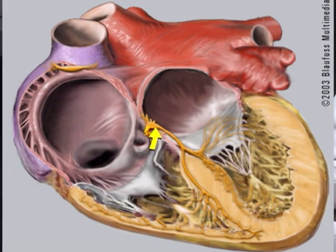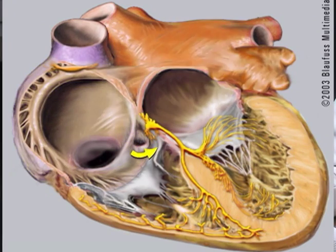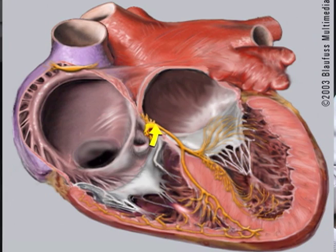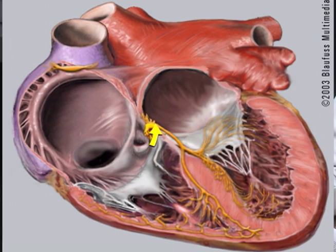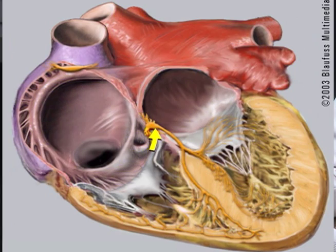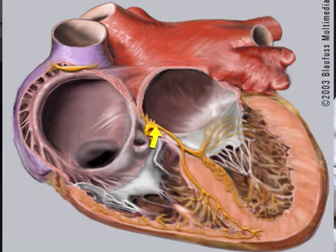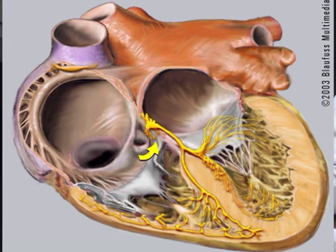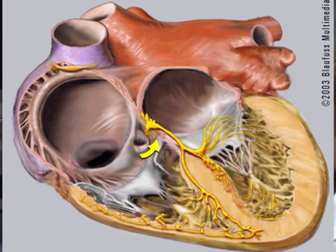In atrioventricular nodal reentry tachycardia, there happen to be two pathways entering the AV node. In some cases, a normal signal can come, pass through one pathway to the AV node, and then go back up the other pathway, as you can see here. The electricity that went back up the abnormal pathway to the atrium then loops around again and starts its circuit around the AV node. This circuit of electricity is atrioventricular nodal reentry tachycardia and can cause heart rates of 200 beats a minute or more.